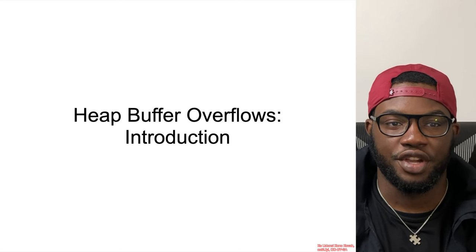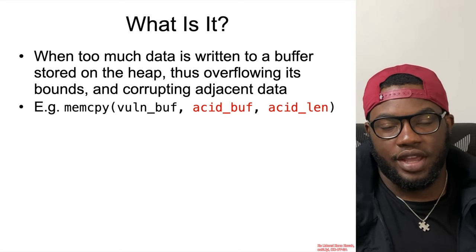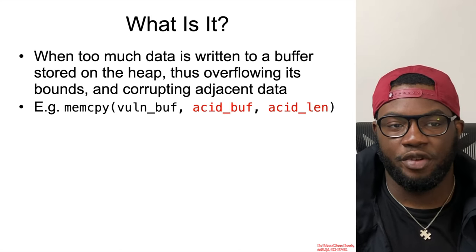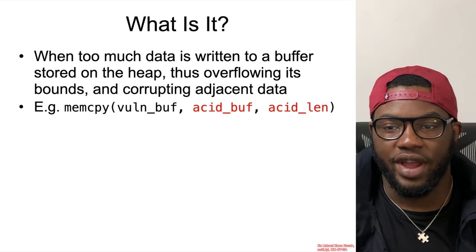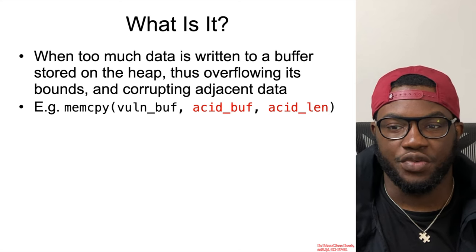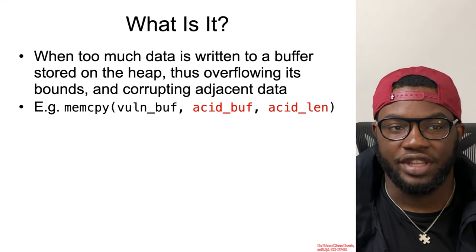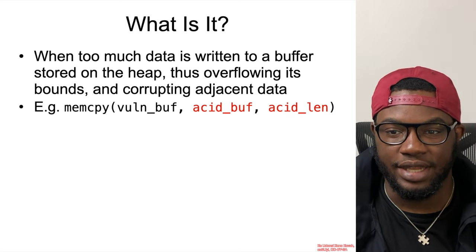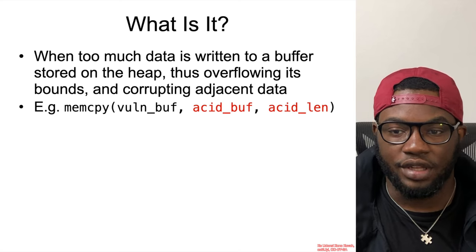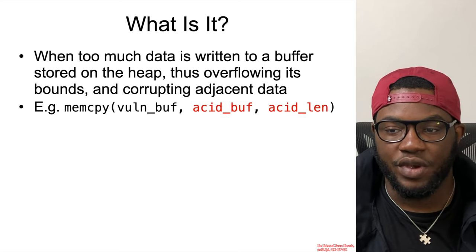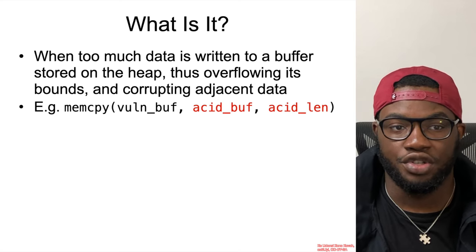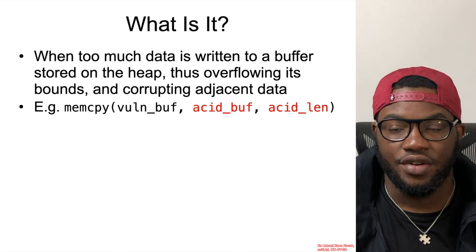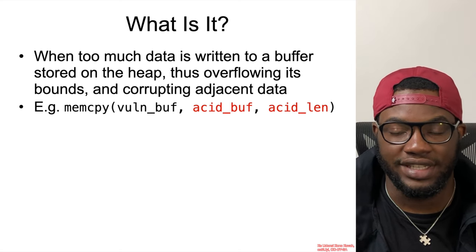A heap buffer overflow is essentially when too much data is written to a buffer that resides on the heap, overflowing its bounds. A typical example is when you have an attacker-controlled buffer with an attacker-controlled size written into a fixed-size location or destination.